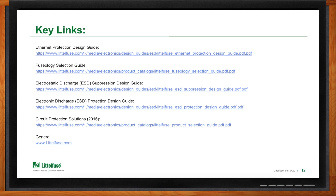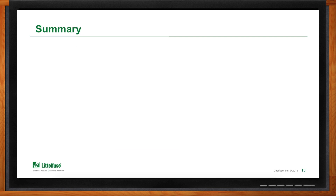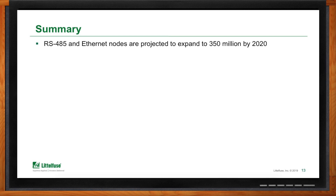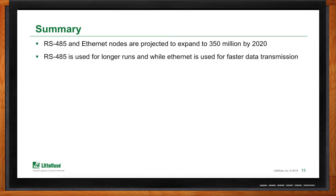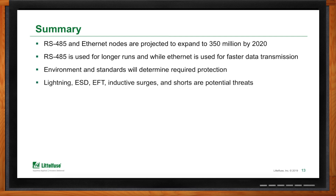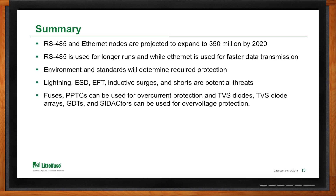To summarize: by 2020 we'll have over 350 million nodes for RS-485 and Ethernet. RS-485 is typically used for longer runs such as remote I/O, while Ethernet is used when you need more data speed, such as for security cameras or imaging systems. Your external and internal environment will impact your protection needs, as will applicable standards. Lightning, electrostatic discharge, electrical fast transients, inductive surges, and shorts all impact protection needs. Fuses and PPTCs are used for overcurrent protection, while TVS diodes, TVS diode arrays, GDTs, and Sedactors are used for overvoltage protection.